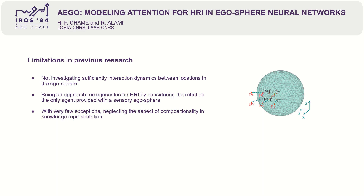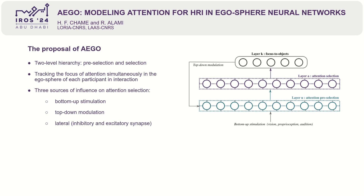neglecting the aspect of compositionality in knowledge representation. The brain-inspired architecture AIGO is proposed as a two-level hierarchy, including a pre-selection and selection stage, as illustrated in the figure at the right. Several instances of AIGO can be used to track the focus of attention simultaneously of each participant in interaction.